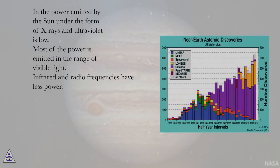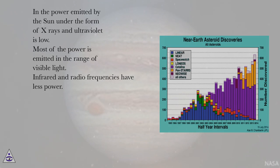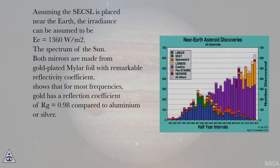The power emitted by the sun under the form of X-rays and ultraviolet is low. Most of the power is emitted in the range of visible light. Infrared and radio frequencies have less power. Assuming the system is placed near the Earth, the irradiance can be assumed to be E = 1360 W/m².